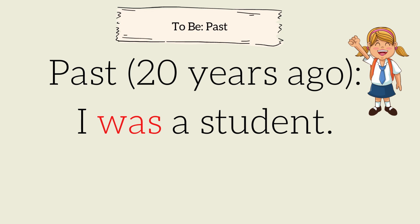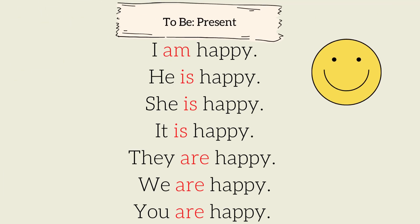'Was' is the be verb in the past. First, let's review how to use the be verb in the present. Listen and repeat. I am happy. He is happy. She is happy. It is happy. They are happy. We are happy. You are happy.